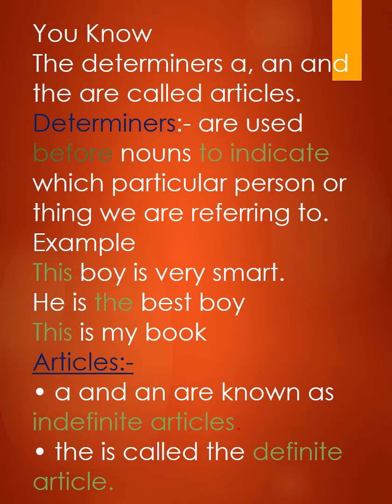Usi tarah se aate hain Distributives — jaise either, neither, each, every. For example, 'Each boy was studying well.' Yahan 'boy' noun hai aur usse pahle 'each' aa raha hai, toh 'each' Determiner ho jayega. Is sentence mein 'each' distributive determiner ke roop mein use ho raha hai.